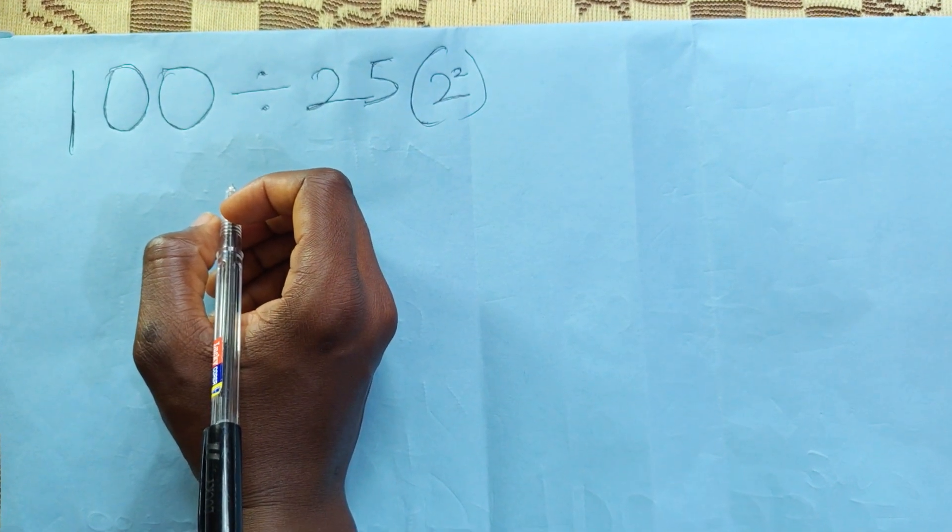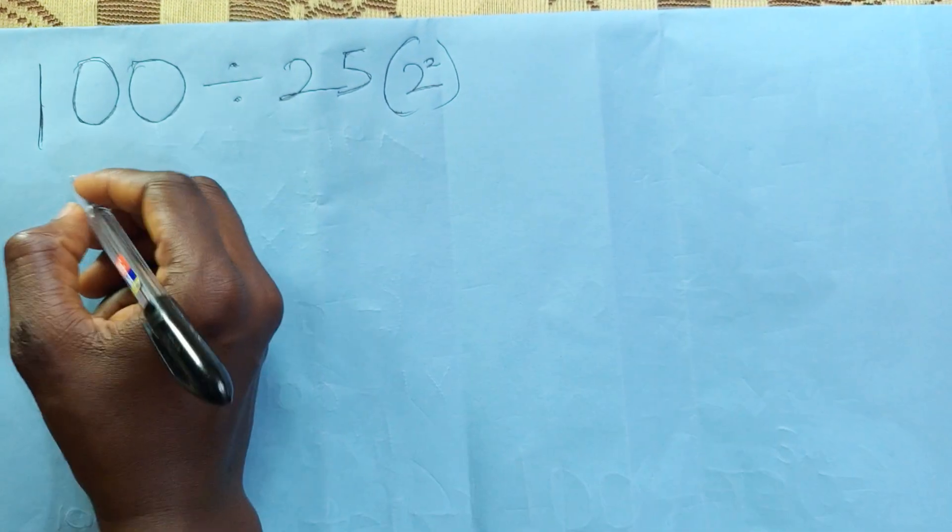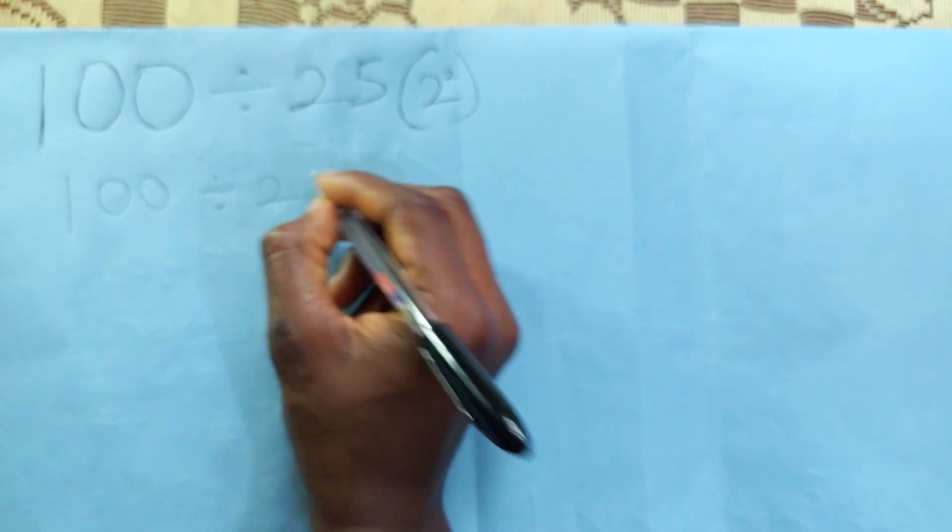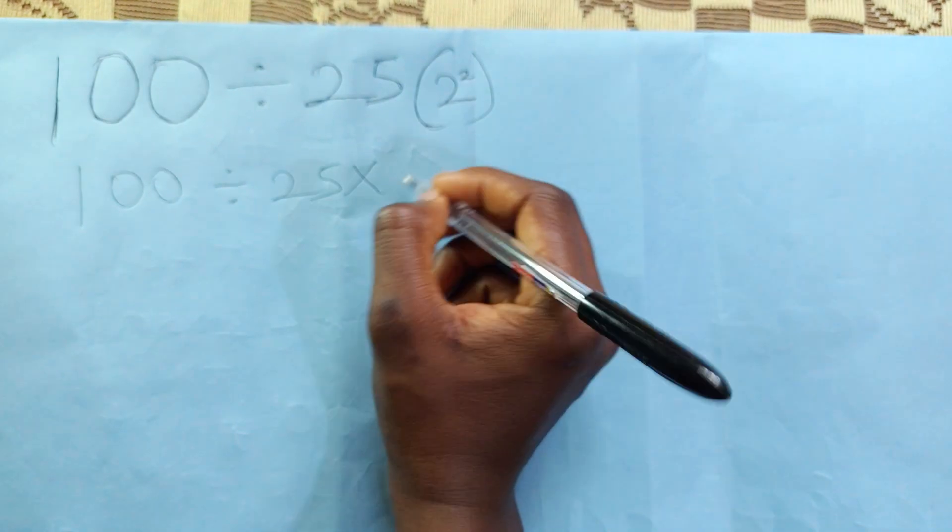100 divided by 25, bracket 2 square. 100 divided by 25 times 2 square is 4.